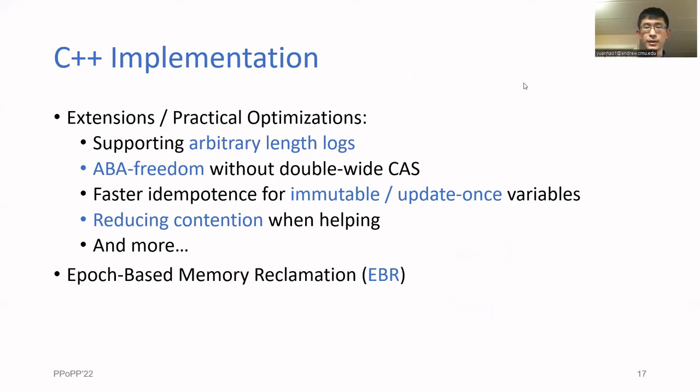For our C++ implementation, we applied many optimizations and extensions beyond these ideas. This includes support for arbitrary length logs and also optimizations for immutable and update-once variables, which are very common in concurrent data structures. These are described in more detail in our paper. For memory management, we used epoch-based reclamation, but you could use any other techniques as well.